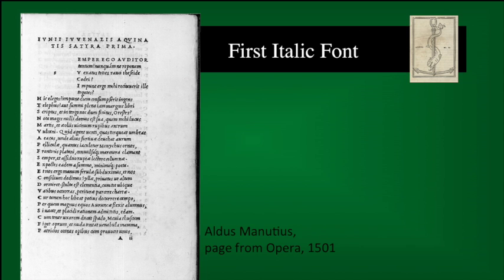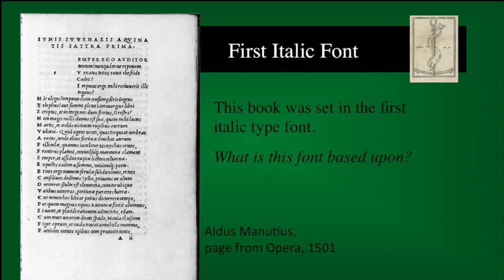In 1501, Manutius met the demand for smaller, more economical books by publishing Virgil's Opera. It had a 3.5 by 6 page size and was set in the first italic type font. Please tell me what this font is based upon. In 1502, Manutius was granted a monopoly on Greek publishing and italic printing in Venice. However, soon after he and Griffo parted ways, the innovation of graphic design in Venice ended. Manutius did publish numerous classic editions in the small font and format in italic, and these made the Aldine Press logo famous throughout Europe.